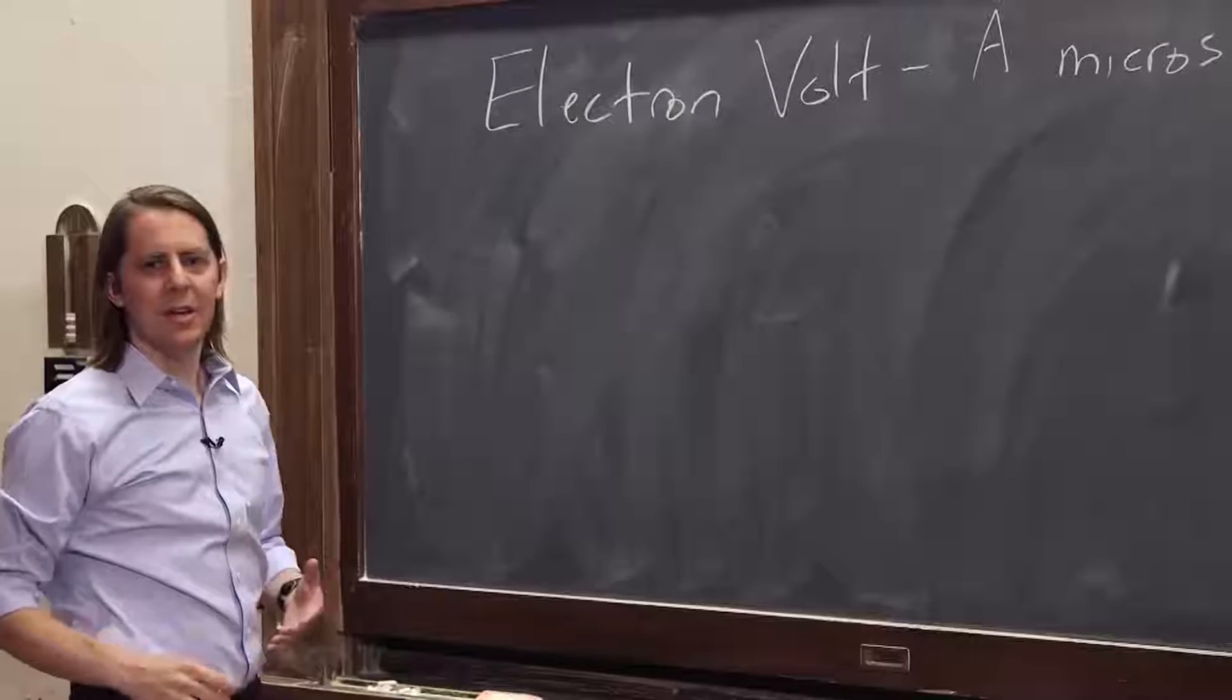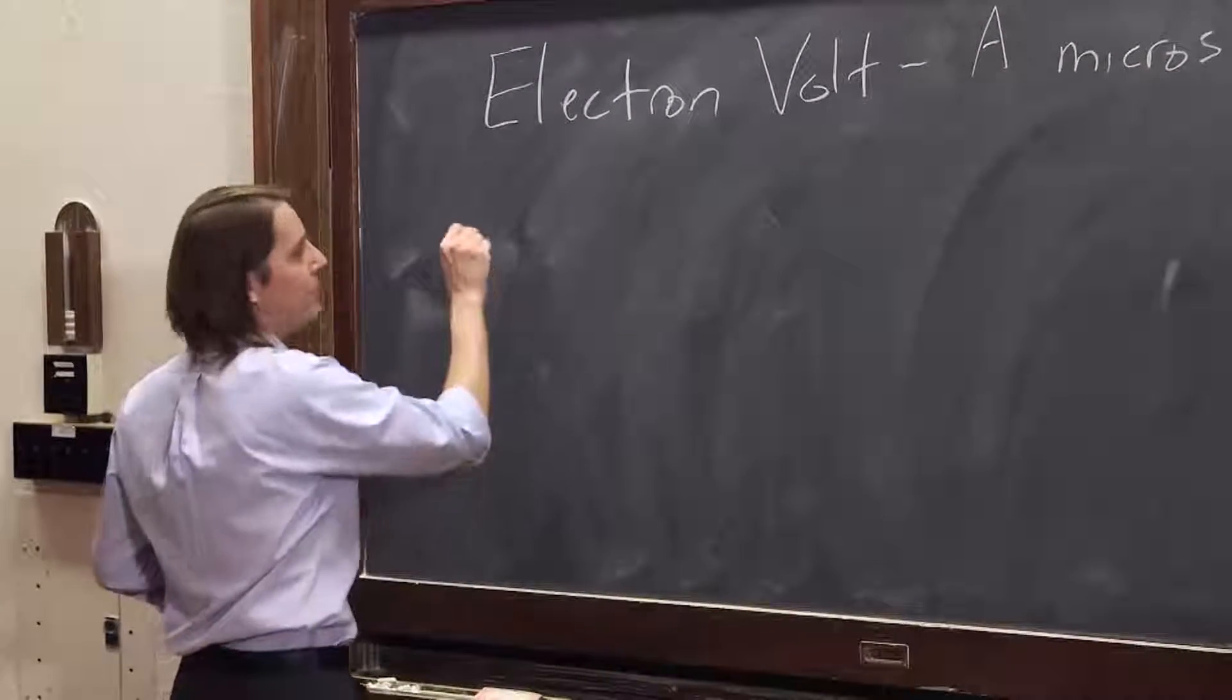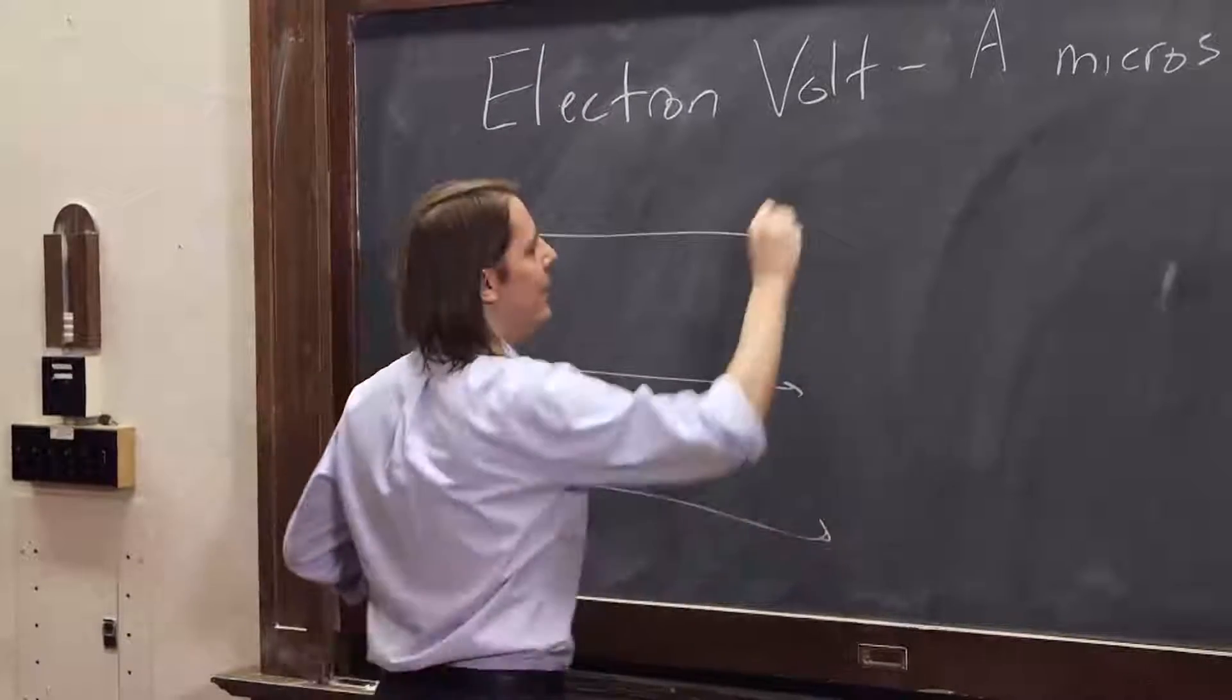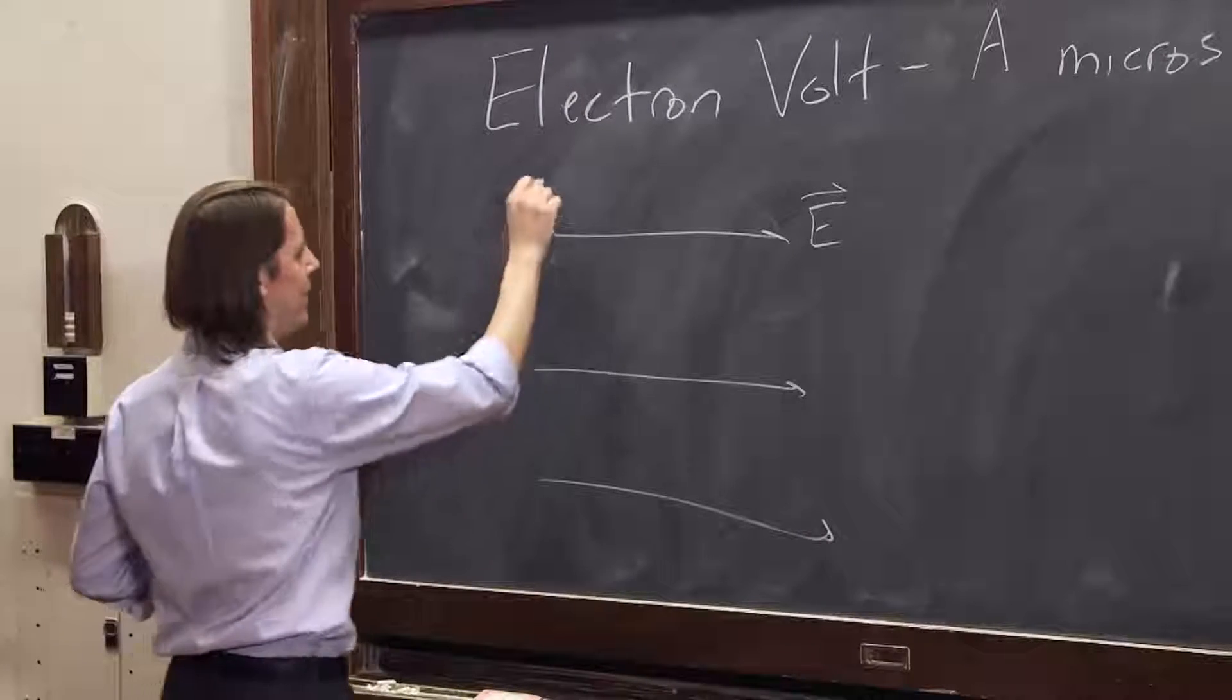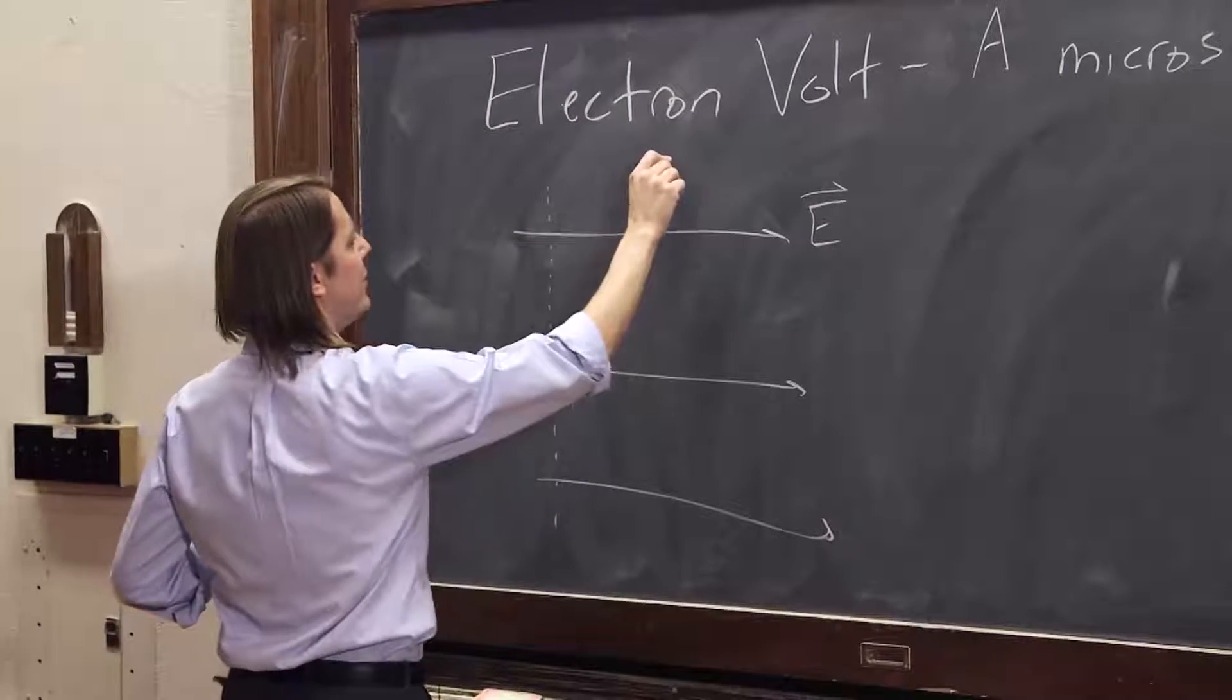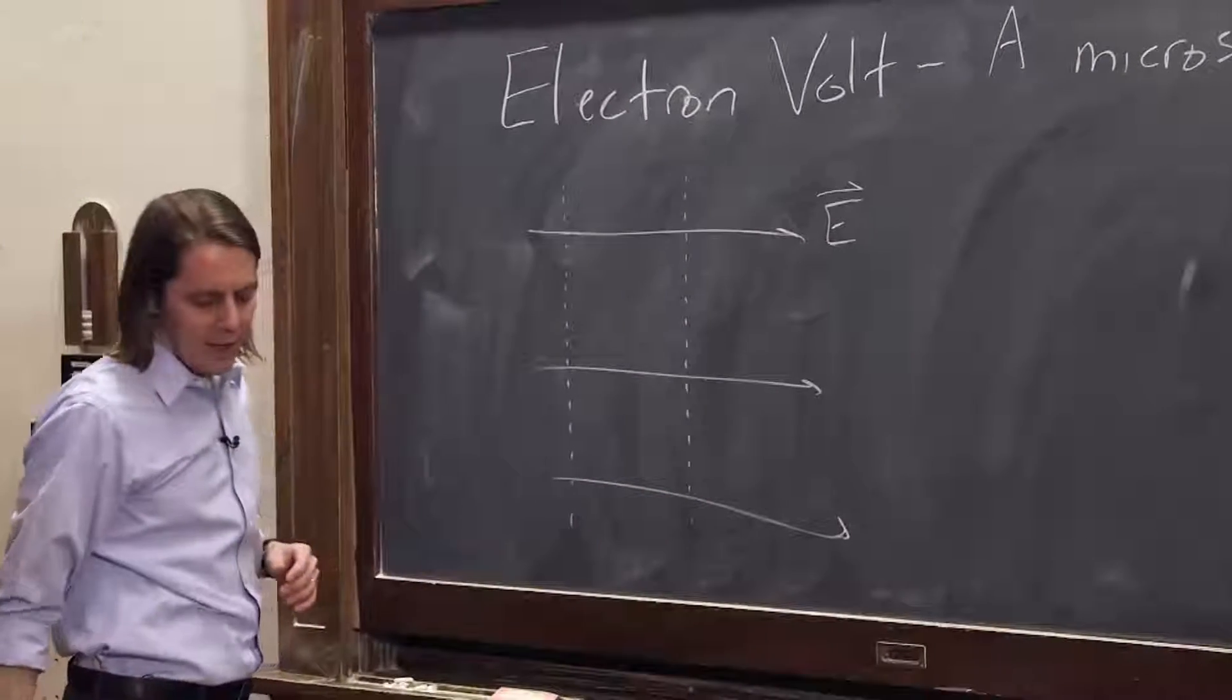To really see it, what we need to do is go back to electrostatics for a minute. Let's imagine we have an electric field going this way, back to the electric field. That nice, direct field. It's easy to think about, relative to the magnetic field at least. And remember, we could draw potential lines along this electric field.